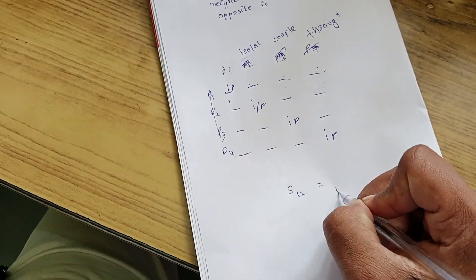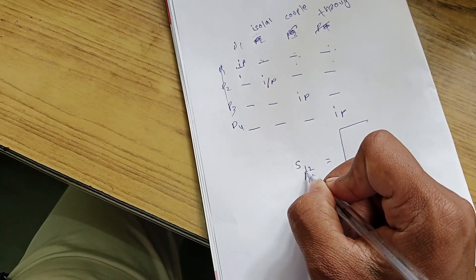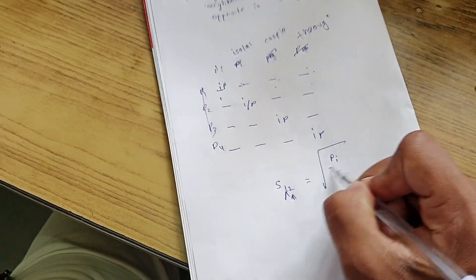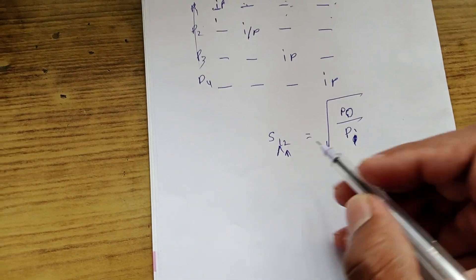Like for S12, the formula is under root, this is the input, this is the output. Power in the input by power in the output. You have to do under root of P output by P input.